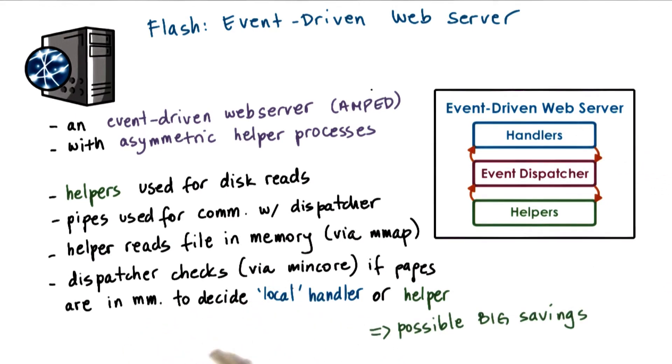it actually results in significant savings because it prevents the full process from being blocked if it turns out that a blocking IO operation is necessary.